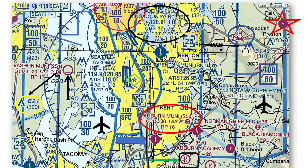What is the height of the obstacle just to the northwest of Vashon Municipal Airport in the top left corner of the chart? The obstacle is 823 feet MSL and 423 feet above ground level.